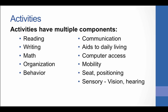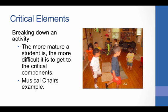Activities are made up of multiple components and may include any of the following: reading, writing, math, organization, behavior, communication, aids to daily living, computer access, mobility, seating, positioning, and sensory factors. For example, consider that your student needs to be able to complete in-class math assignments. How many of these components may be involved? The student may need to see and read questions from a textbook, write out the problem, organize thoughts and use problem-solving strategies, maintain attention, communicate the need for help, etc. With so many components in each activity, it is really important to determine what critical elements we need the student to be able to do. As students mature, breaking down an activity like completing in-class math assignments into its critical components becomes more difficult.